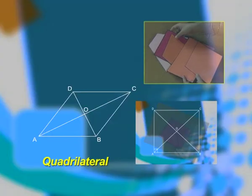Mathematics can be learned through hands-on activities. Dear students, you must have studied about various geometrical shapes in your classroom. Do you know what is a quadrilateral? A quadrilateral is a closed figure formed by four line segments.